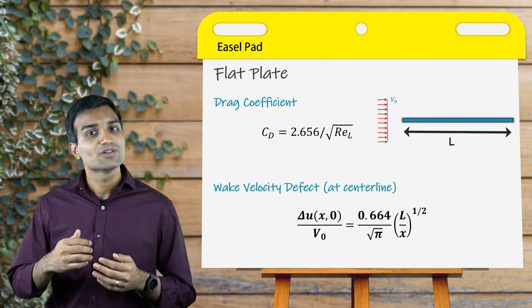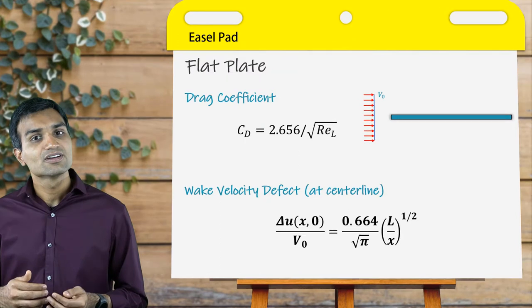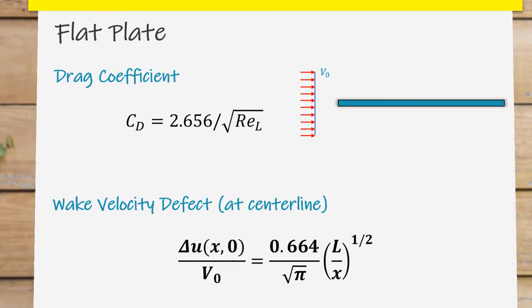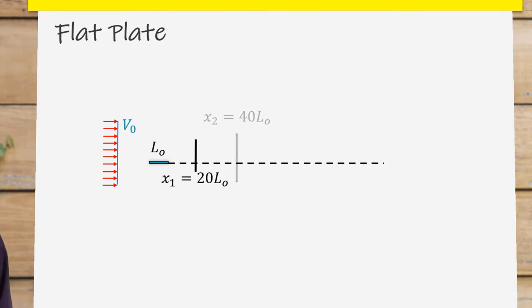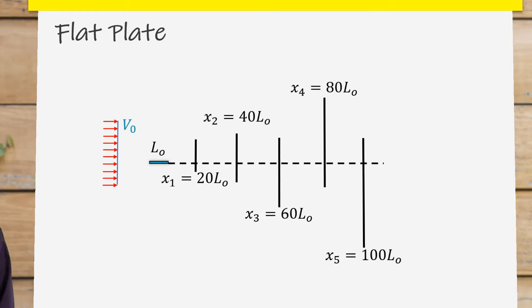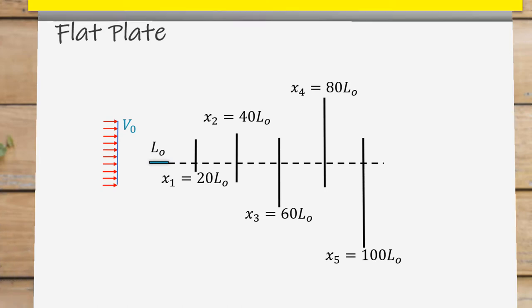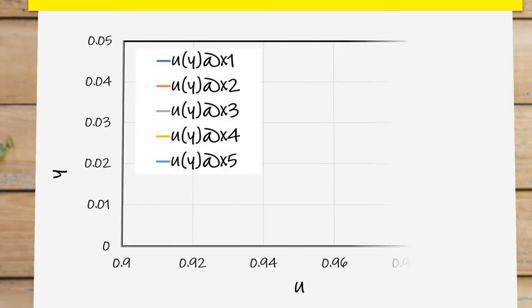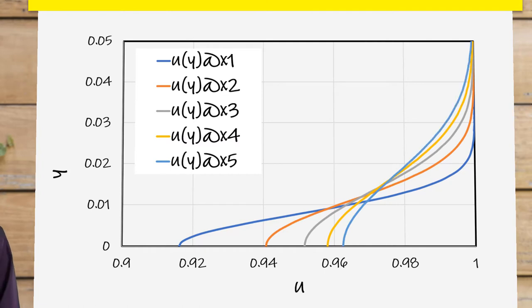To understand the solution better, let's plot the wake velocity as a function of y, which is the perpendicular distance to a flat plate at different x locations downstream of the wake. For a constant value of x, the wake velocity increases from the centerline to the freestream velocity. Moreover, the centerline velocity is continuously increasing as we move further downstream. In other words, the velocity defect decays further as the wake moves downstream.